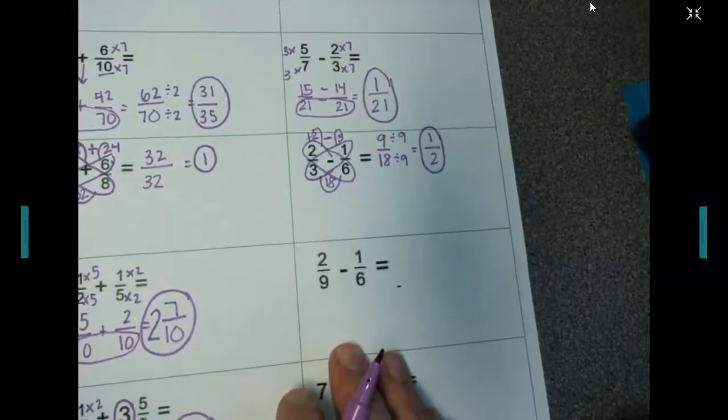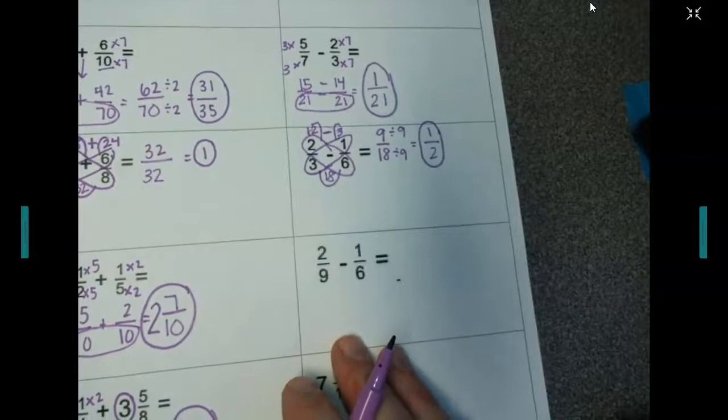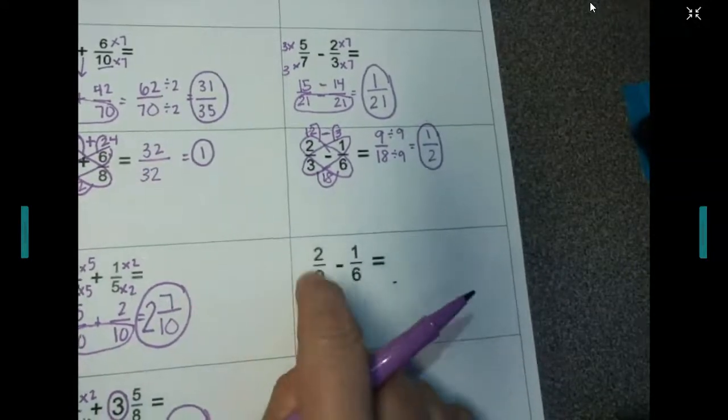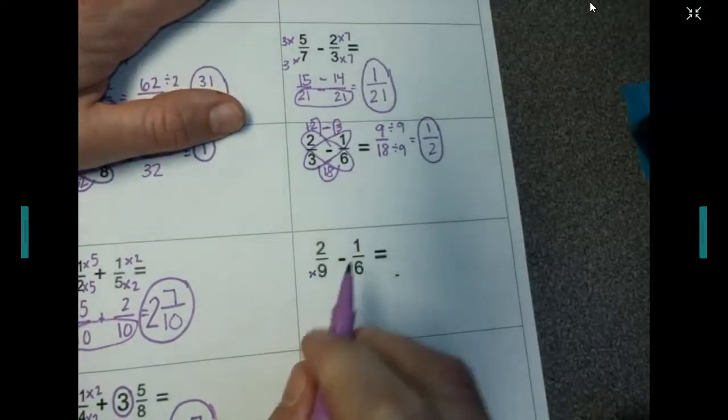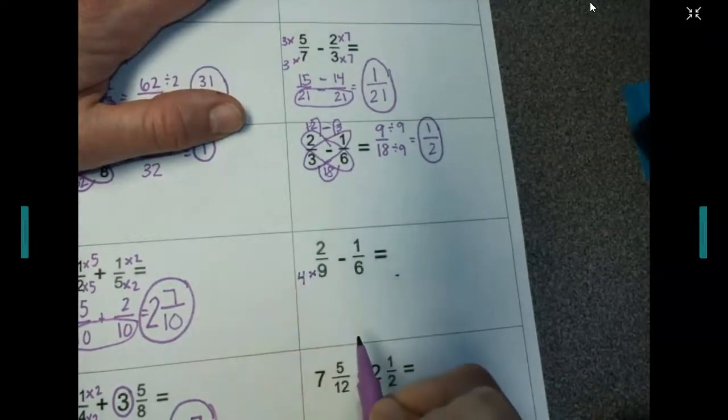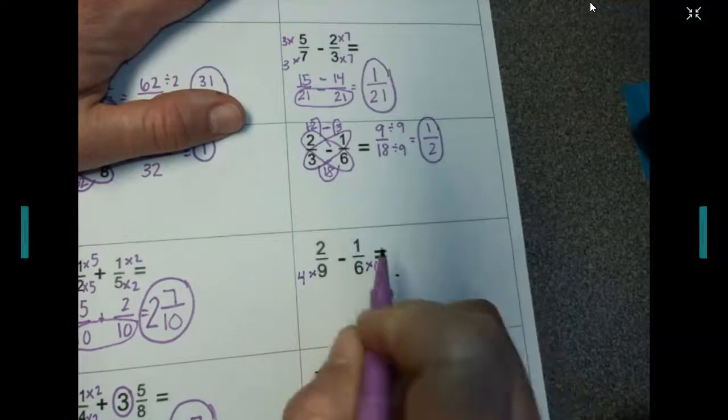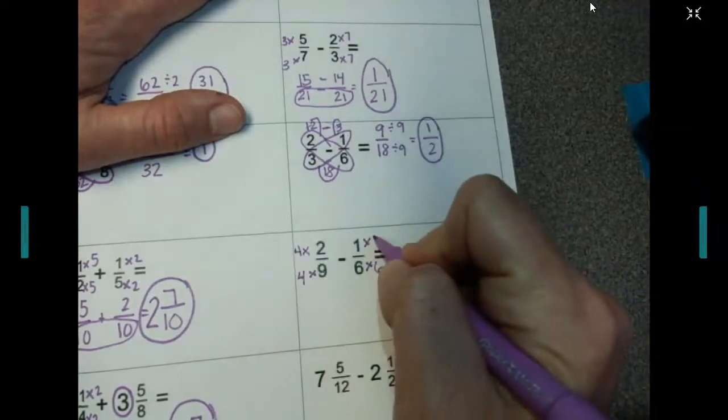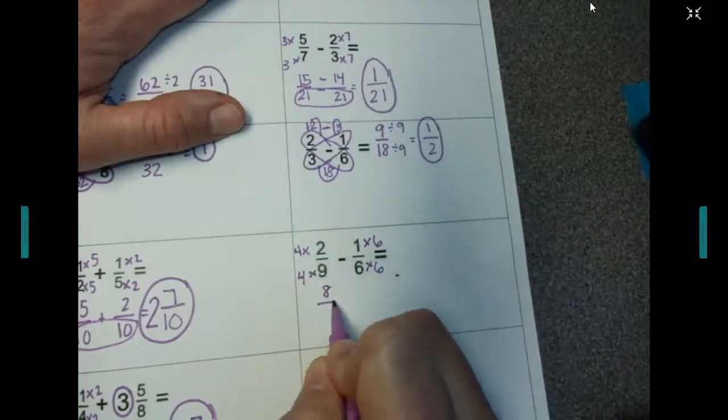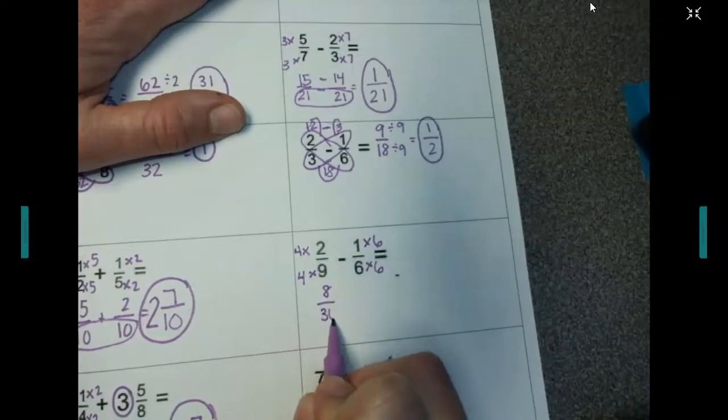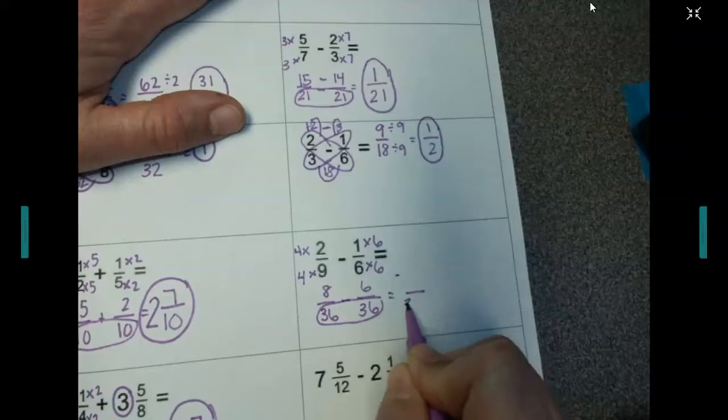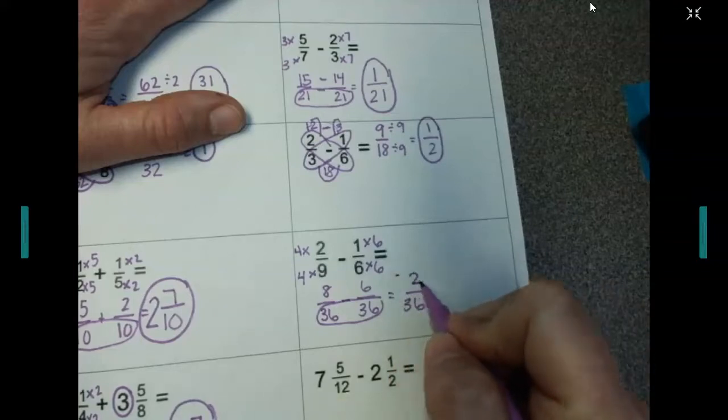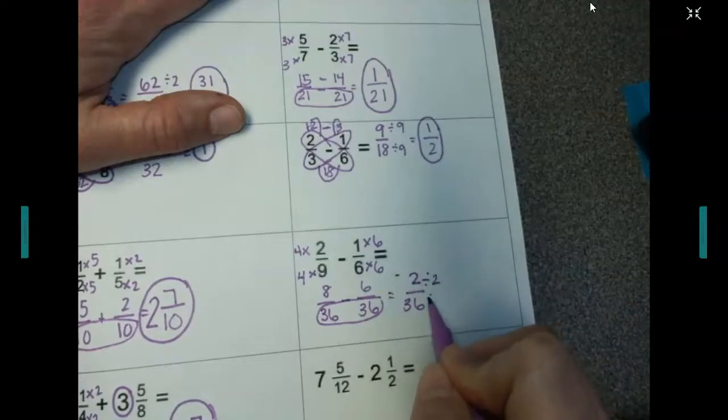Next one. We're going to find a common denominator. And my common denominator, instead of taking 6 and multiplying it on this side, and 9 on this side, I'm going to think of a smaller one. I can change 9 into 36 and I can change 6 into 36. So on this side, we're multiplying by 4. On this side, we're multiplying by 6. 4 times 2 is 8. 4 times 9 is 36. 1 times 6 is 6. 6 times 6 is 36. Same numbers on the bottom. 8 minus 6 is 2. And then we're going to simplify by 2 because it's on the top and the bottom.